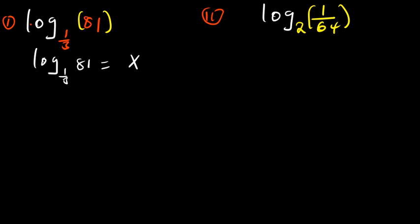But in a case where you can make 81 to be the same as the base, then that is okay. What I'm going to do now is convert this from log to exponential. The base raised to the power of what is outside is equal to 81.